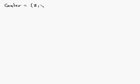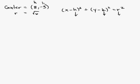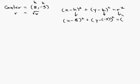Let's do another one. What if we're given a center of (8, -3) and a radius of √6? Again, set up the standard form: x minus h, quantity squared, plus y minus k, quantity squared, equals r squared. Here h = 8 and k = -3. Plugging in: x minus 8, quantity squared, plus y minus negative 3, quantity squared, equals √6 squared.